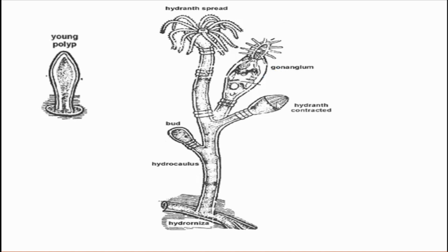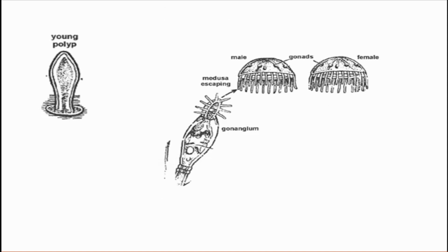Then blastostyle develops, and in its body we can see medusoid buds. From the blastostyle, those medusoid buds, when they get mature, break the gonangium and come out. These medusal forms carry gonads — sex cells. The gonads are located mainly at the base of the radial canals, and there are four gonads present, each associated with a radial canal.